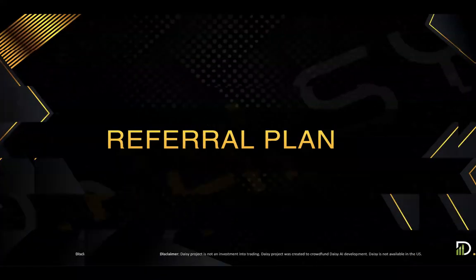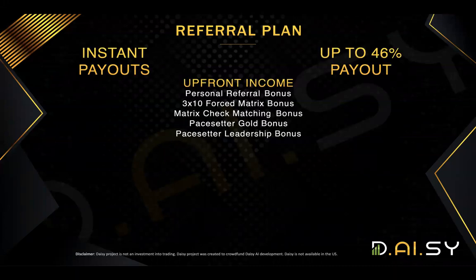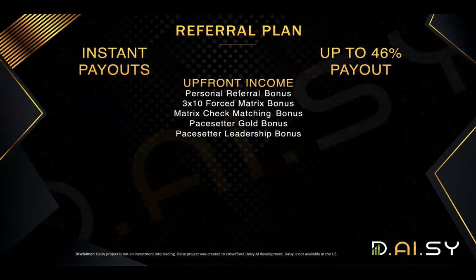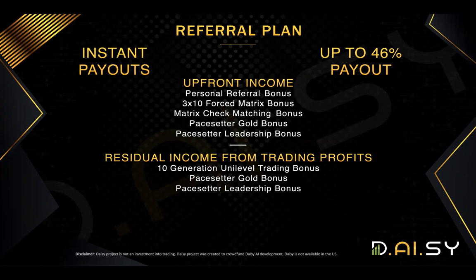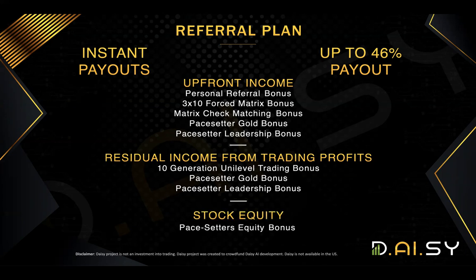The referral plan has different types of referral bonuses. One category is the upfront income — that's the income we get on the front end when people contribute. This includes the personal referral bonus. Then there is metrics income, paid by the free-by-ten forced matrix, a matrix check matching bonus, a pay setter gold bonus, and a pay setter leadership bonus. On the back end, when people start withdrawing trading profits, there are three bonus types: the uni-level trading bonus, the pay setter gold bonus, and the pay setter leadership bonus. And finally, stock equity.